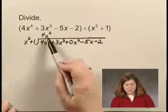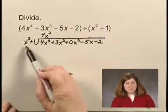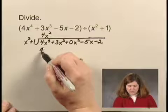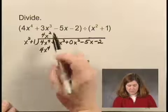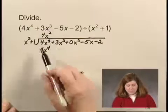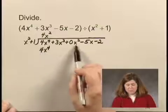Then I multiply 4x^2 times the entire divisor, and I get 4x^4 + 4x^2. And I want to line up the 4x^2 under my x^2 term.